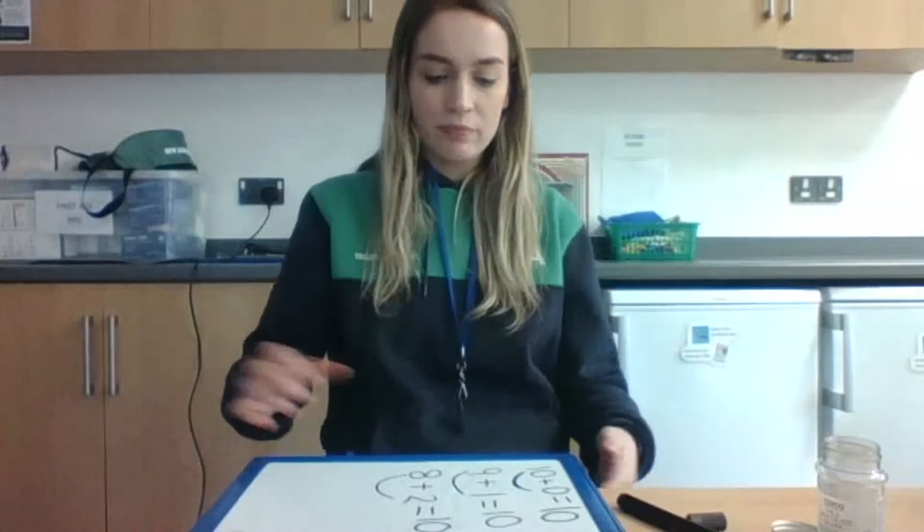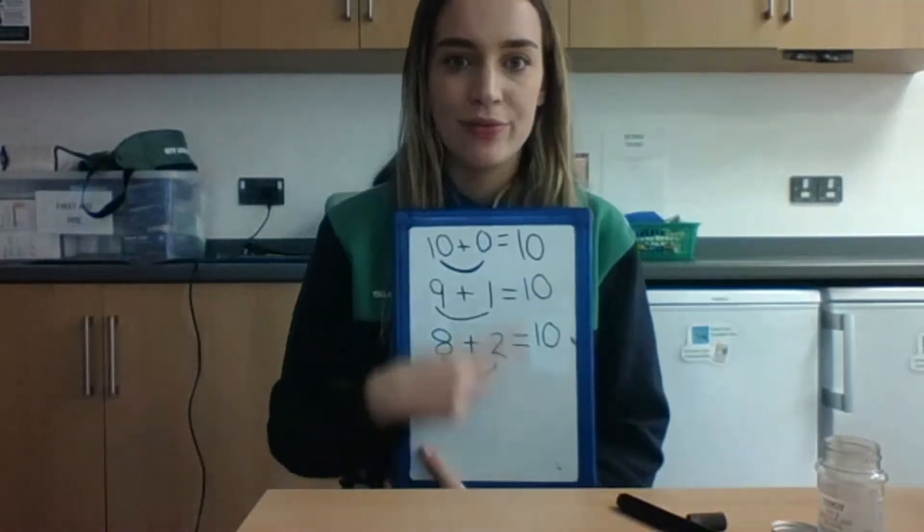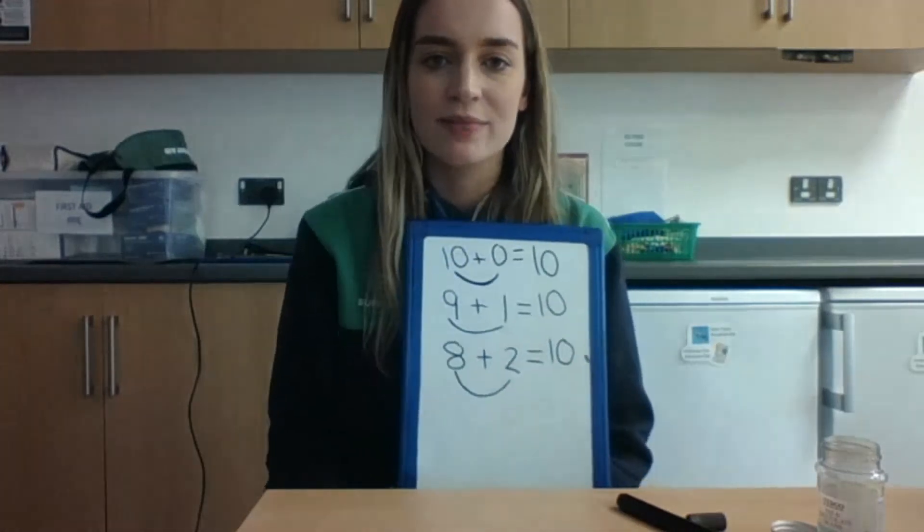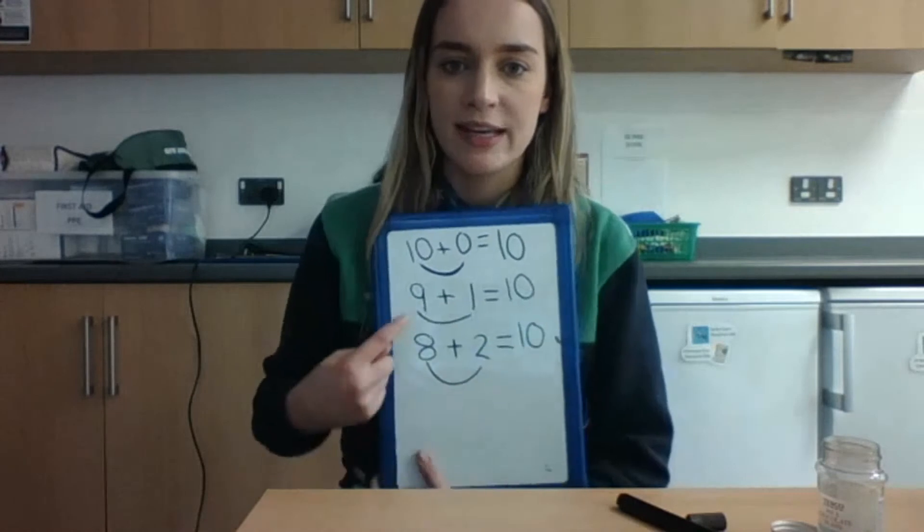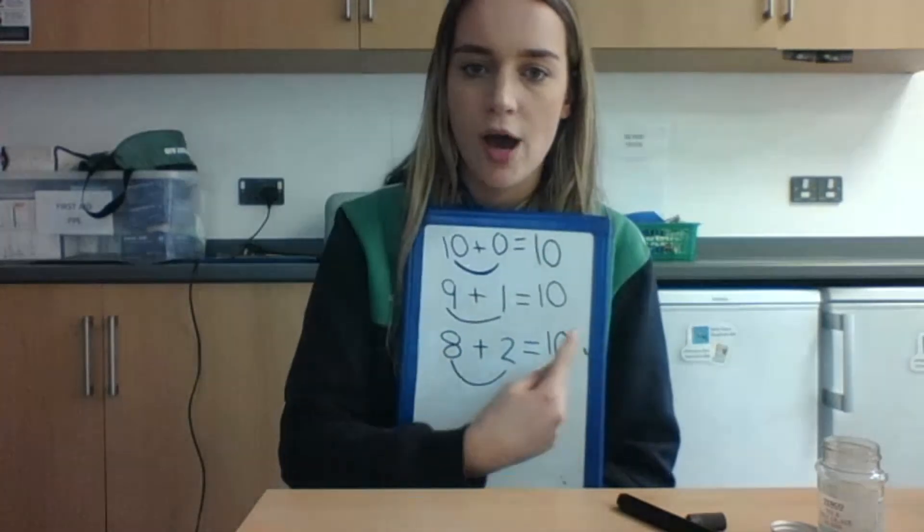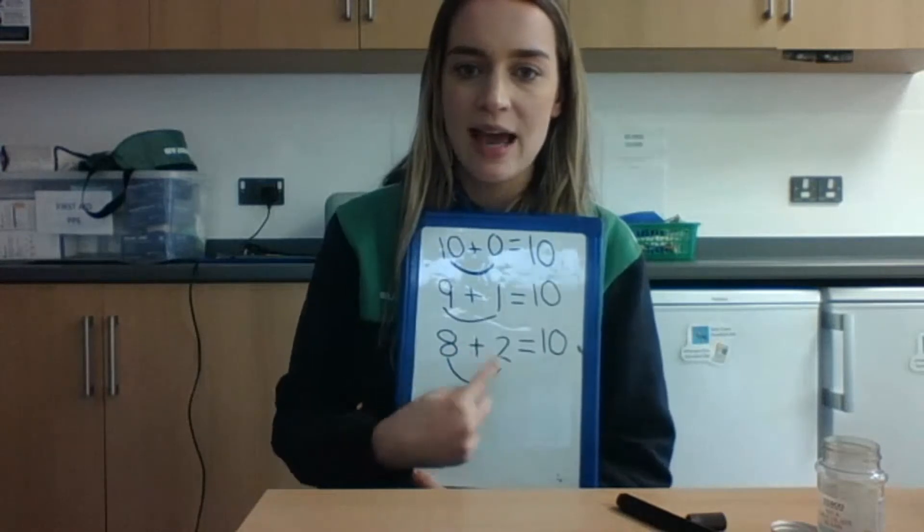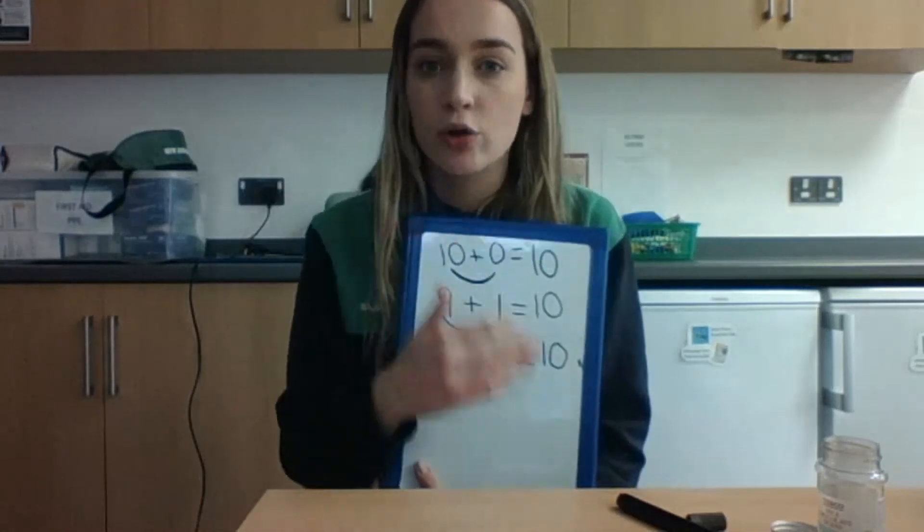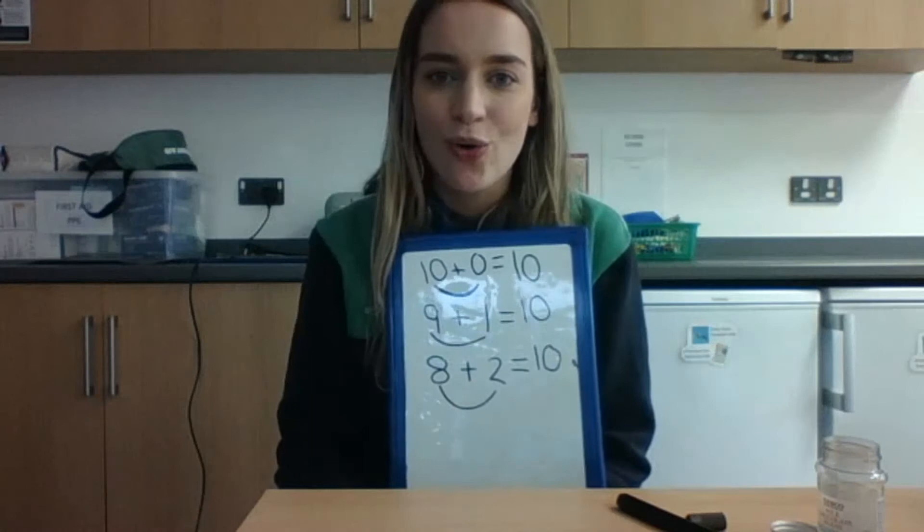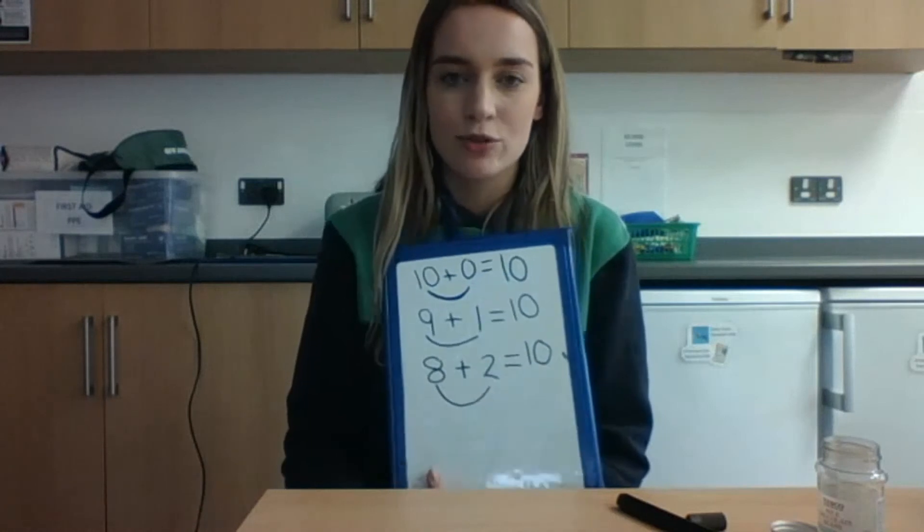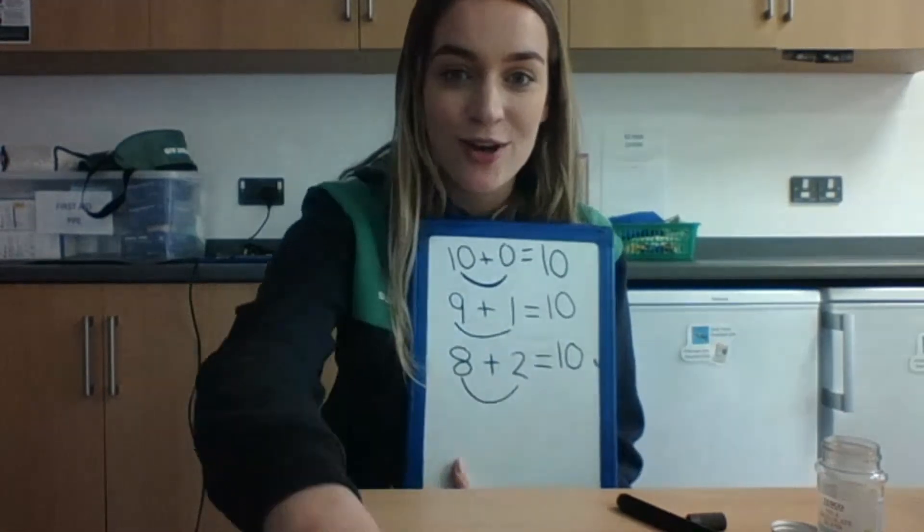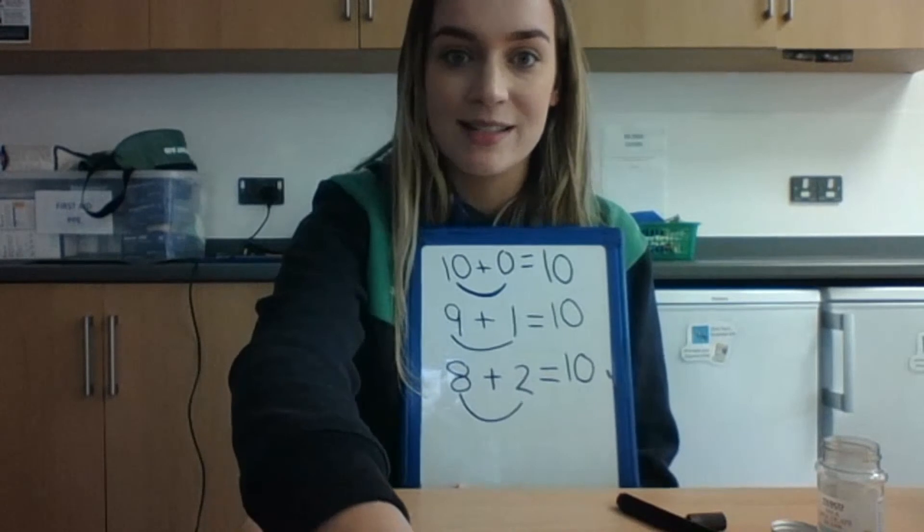Now then, there are lots more number bonds than this. And I want to see if you can find any more number bonds to 10 all by yourselves. Now remember, a number bond is two parts that make a whole. So you need two numbers that add together to make number 10. And you can write them all down on a piece of paper, on a whiteboard. I'll also leave some worksheets on your team's account in case your grownups want to print any of them off. Now, good luck. This is going to be a bit of a challenge, but I know you can do it. Good luck, boys and girls. I can't wait to see some pictures.